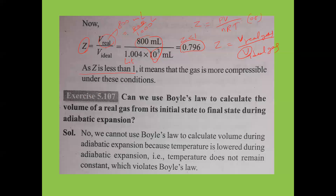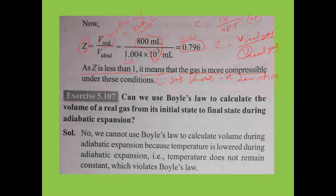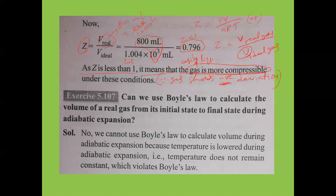Since Z = 0.796 is less than 1, it means the gas is more compressible under these conditions. The gas shows negative deviation from ideal behavior. This means the gas can be more easily liquefied — compressibility factor less than 1 → negative deviation → more compressible → easily liquefied.